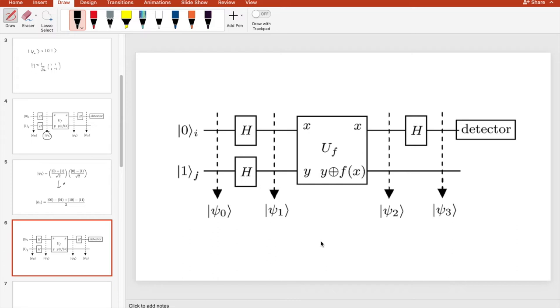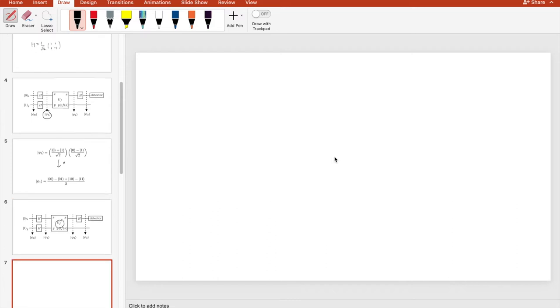Now let's observe the unitary matrix shown here as u sub f. So this unitary operator maps our vector x, y to x, y addition modulus 2, f of x. Now, for those unfamiliar, mod 2 essentially means that you add y and f of x, divide by 2 and then print the remainder.